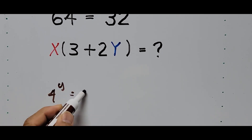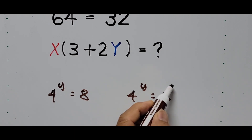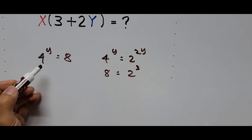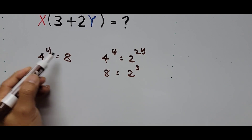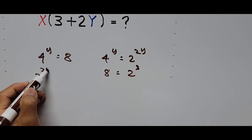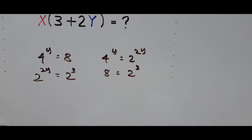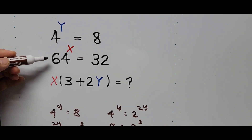4 raised to y can be written the same way as 2 raised to the 2y, and 8 can be written the same way as 2 raised to the 3rd power. Now let's focus our attention on the second exponential equation: 64 raised to the x power equals 32.